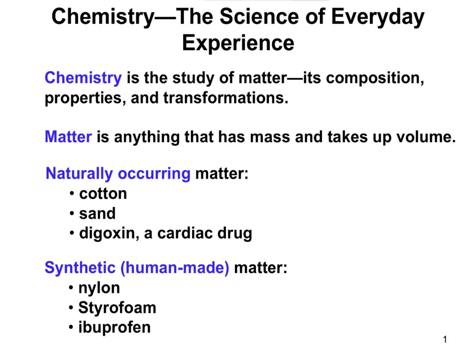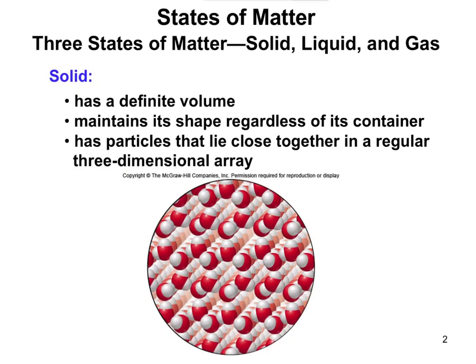There are also human-made things like styrofoam and nylon, and another example is ibuprofen — like Advil. You don't find that growing on a tree, but that chemical can be synthesized from scratch and made useful. So matter can really transcend a lot of different types of products that are out there in the world.